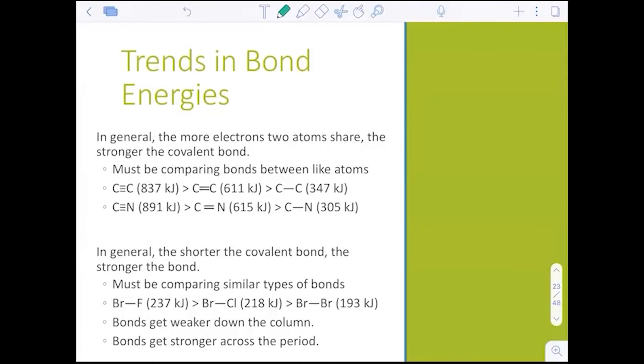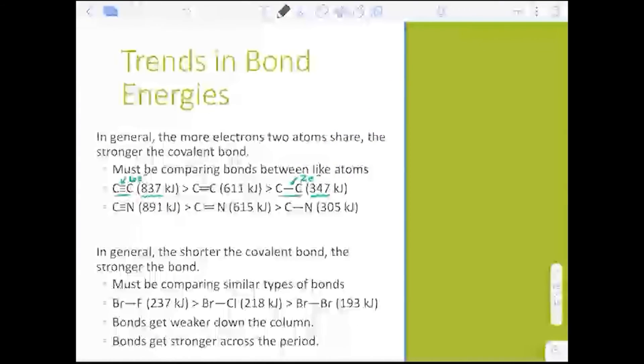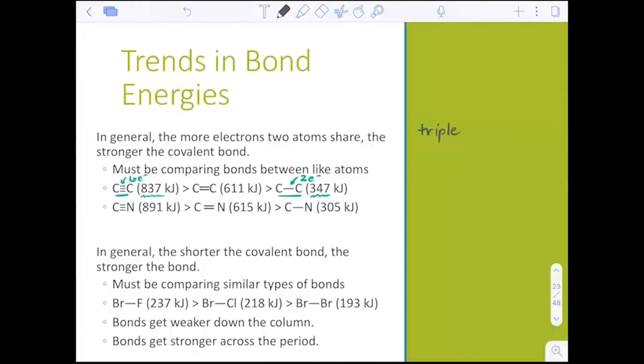Trends in bond energies. In general, what we see is that when comparing like atom to atoms, so carbon-carbon bonds, a triple bond costs more energy than a single bond. That makes sense. There are six electrons here to pull apart. There are only two electrons here to pull apart. And again, these values would be on a table. But what we would know is that triple bonds are stronger than double and single bonds.